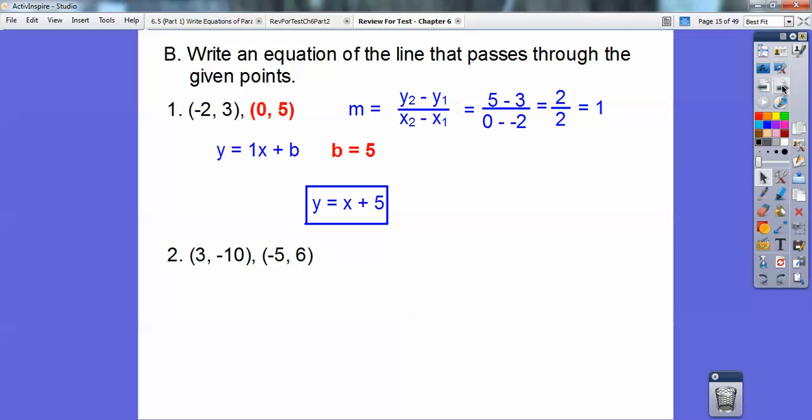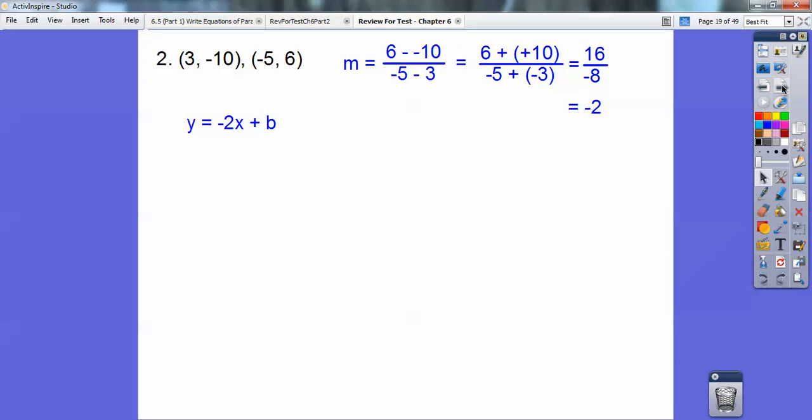Number 2. Use slope formula again. So we're going to get 6 minus minus 10 is 6 plus 10, or 16. And negative 5 minus 3 is negative 5 plus a negative 3, which is negative 8. You should get 16 over negative 8 is negative 2. So then we know y equals negative 2x plus b. You can substitute in either this point, 3 comma negative 10 for x and y, or negative 5 comma 6 for x and y. I did the 3 negative 10. Remember, the negative 10 is the y, and the x is a 3. So you get negative 6 on the right, and you're going to plus 6 to both sides. You should get negative 4. Don't forget to put it back up into the problem: y equals negative 2x minus 4.